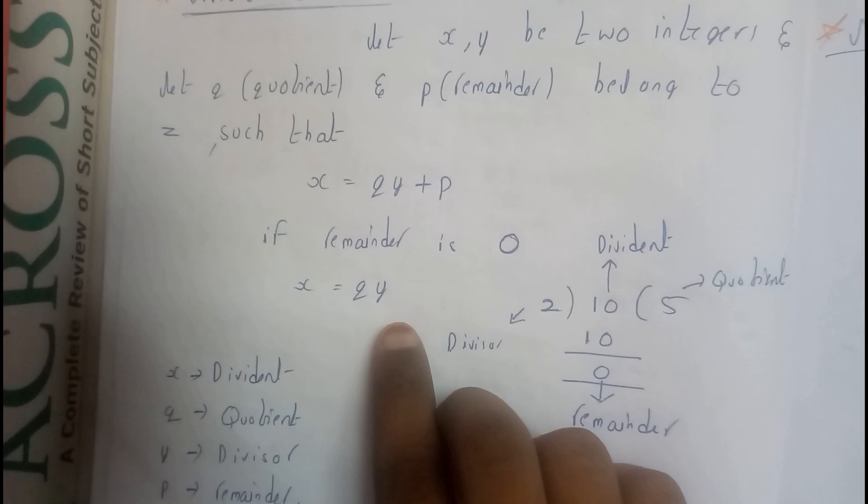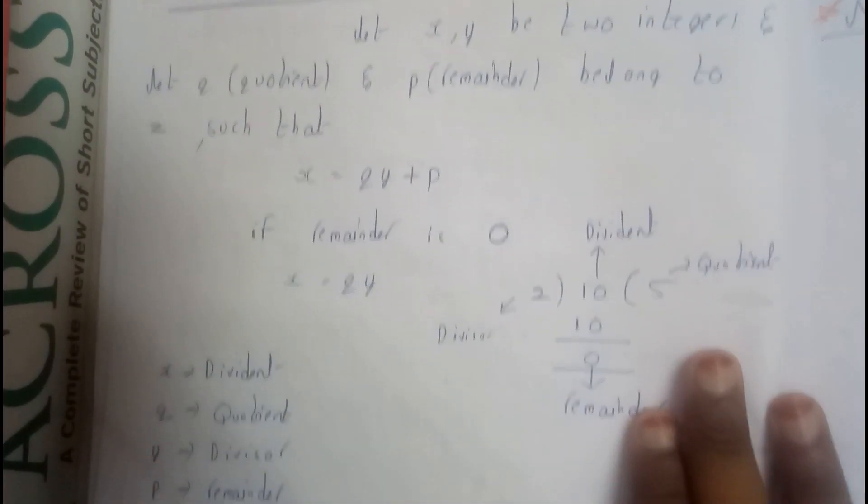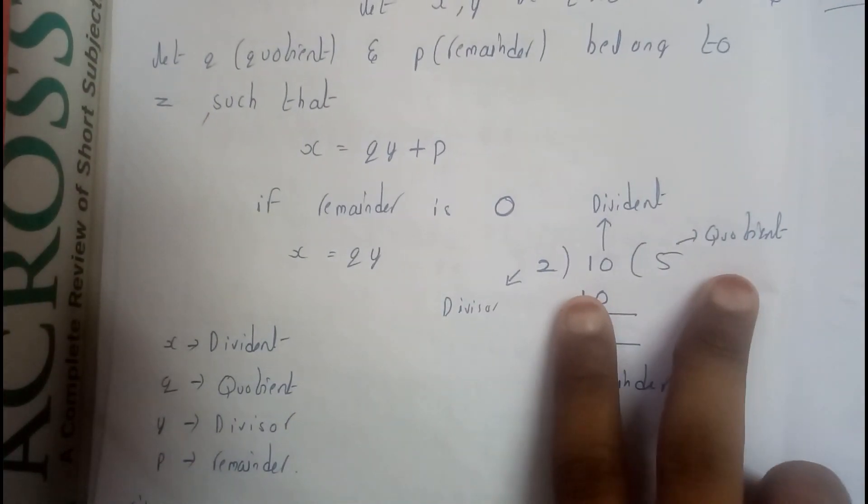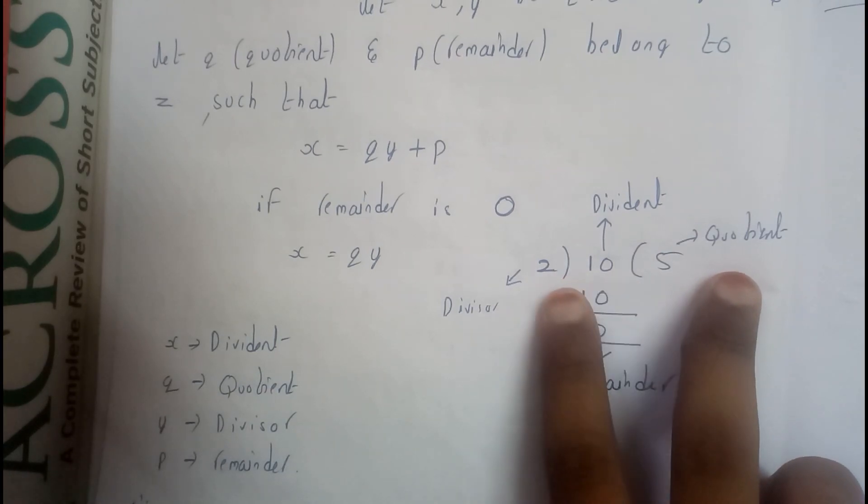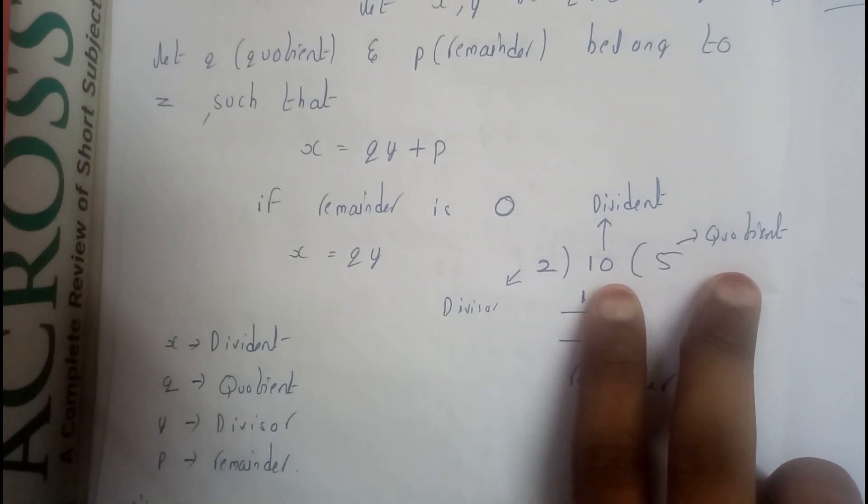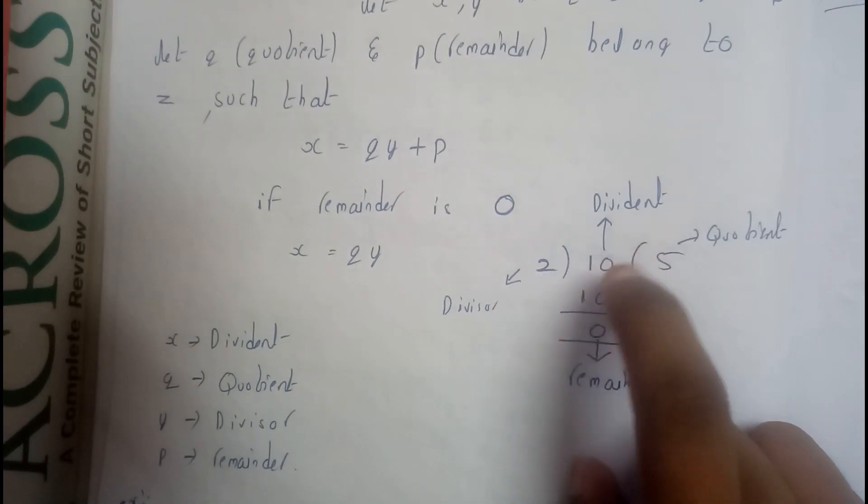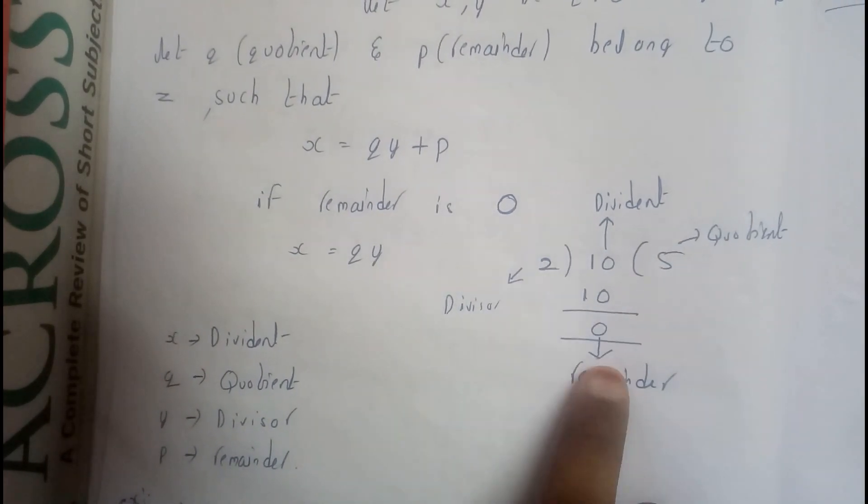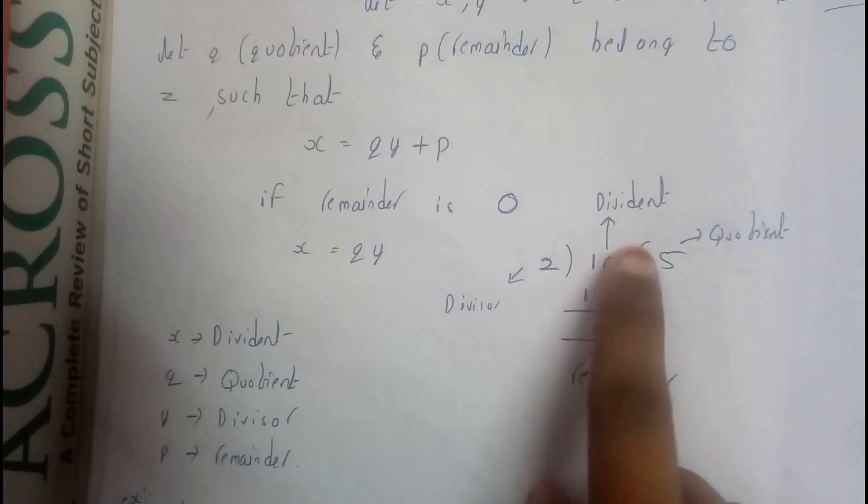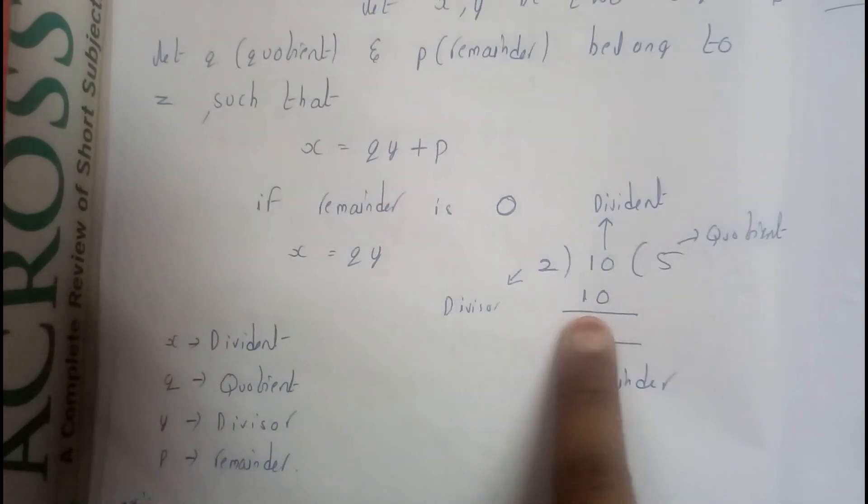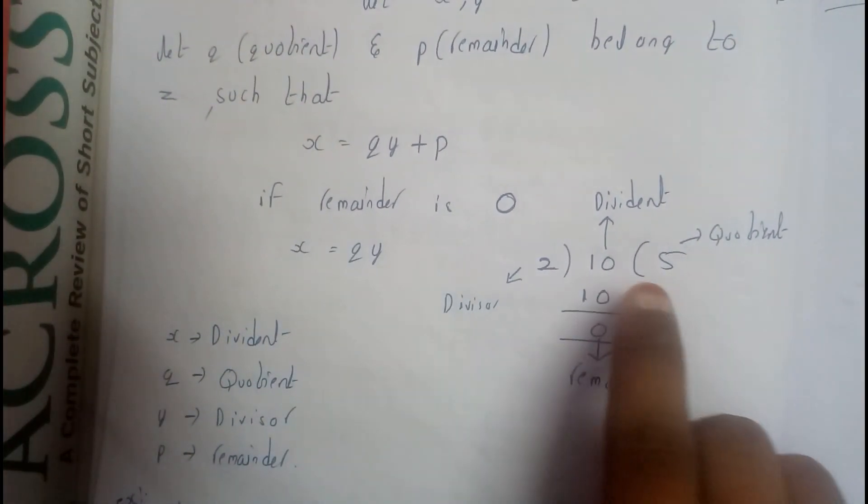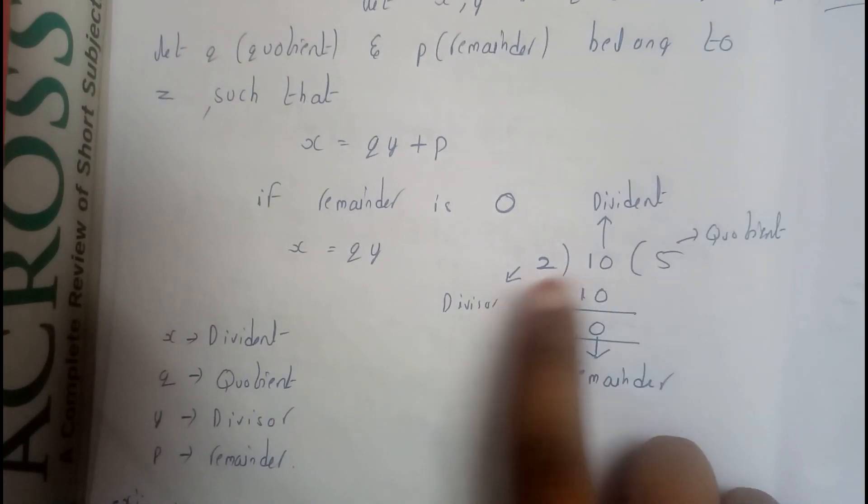So now let us take a small example. We want to divide 10 by 2. So 2 will be written here, 10. So 2 fives are 10, so 10 minus 10 is 0.